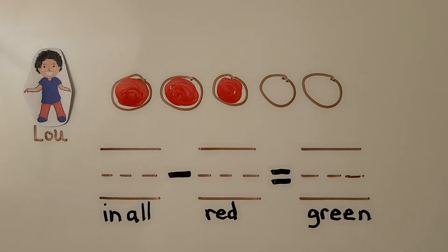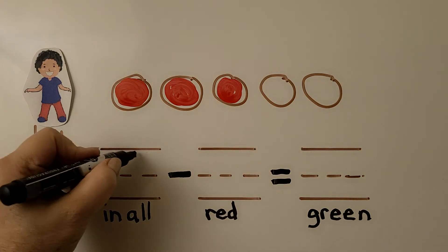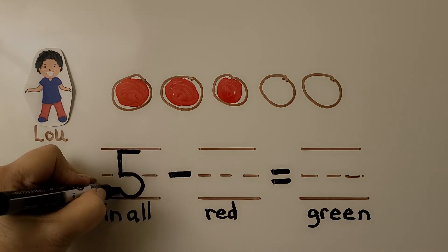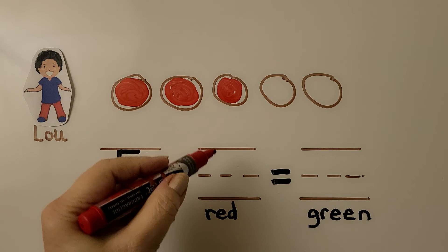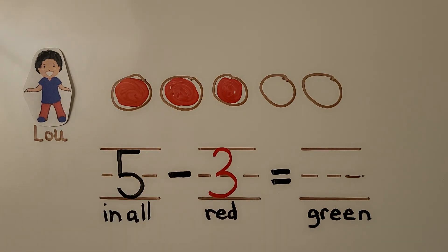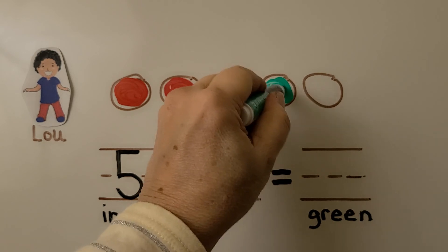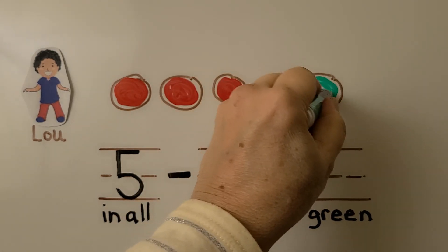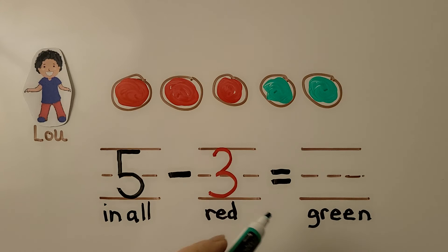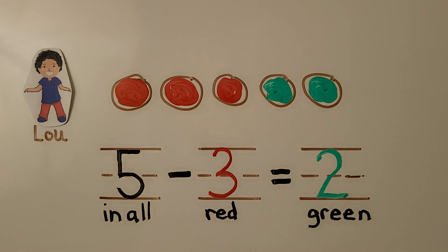We can see how many must be green. There are five in all, so we write the five. We know there are three that are red. We can color the rest green — this one must be green, and this one must be green. There must be one, two green ones.